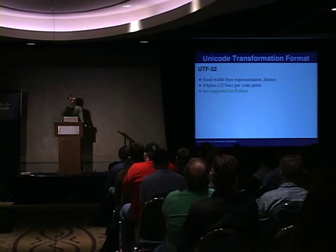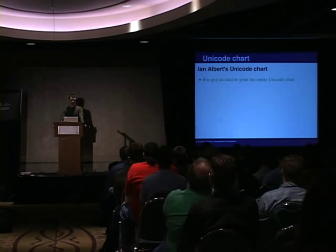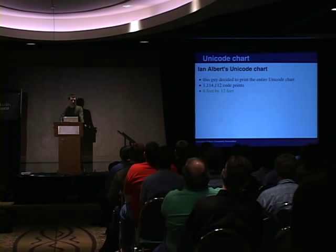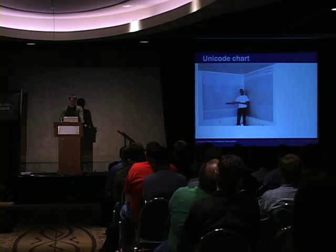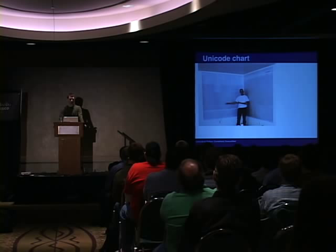I found this guy on the internet, Ian Albert, who decided he wanted to print the entire Unicode chart. That's a lot of characters, and it turned out he had to print it pretty big with a pretty big file at the end of the day. Here he is with the Unicode chart. If you go to his website, it says the Kinko's charged him from $20, and he's pretty sure they undercharged him. Here he is at 50% and 100% scale — it looks pretty cool.